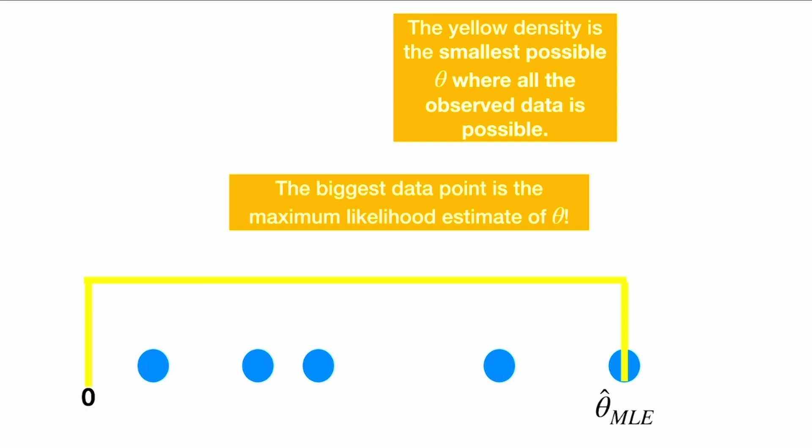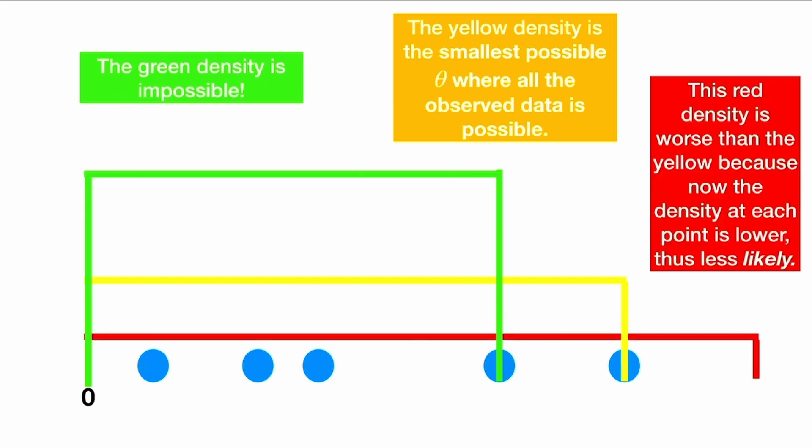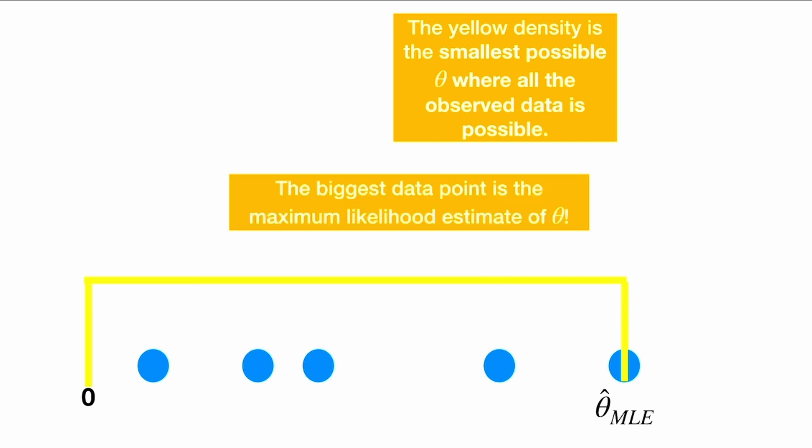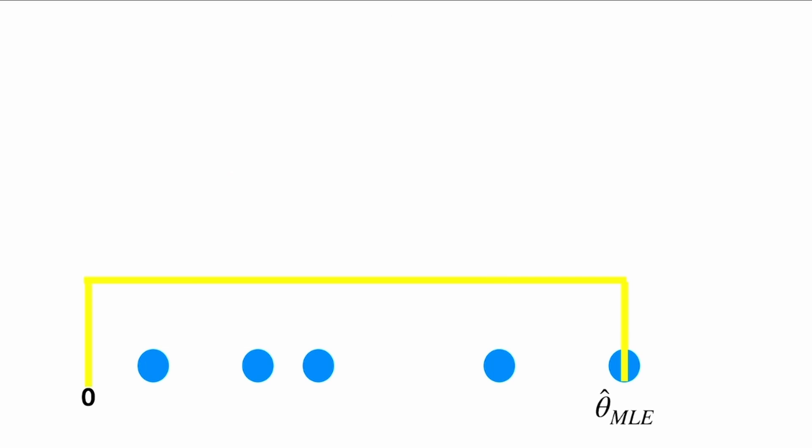The biggest data point is the maximum likelihood estimate of θ because it finds this balance between the things that are impossible in green and the things that are less likely in red. This is the maximum likelihood estimate of θ. It maximizes the likelihood.